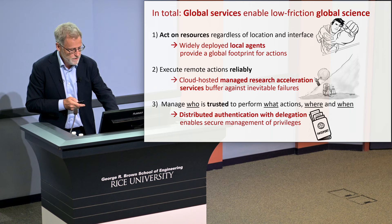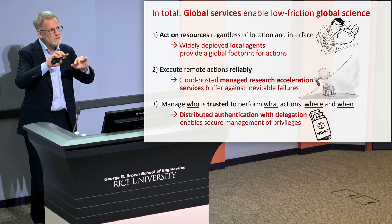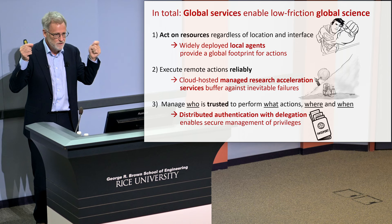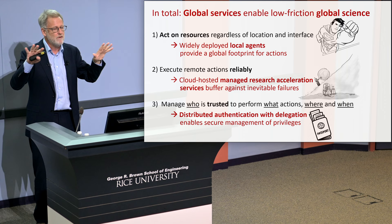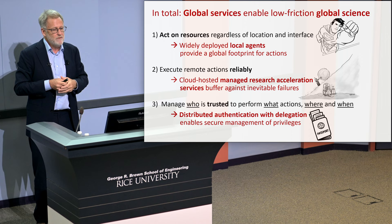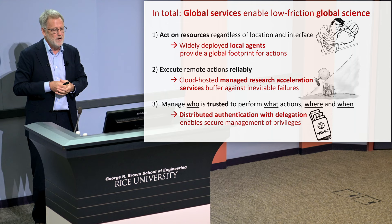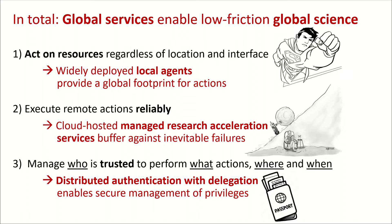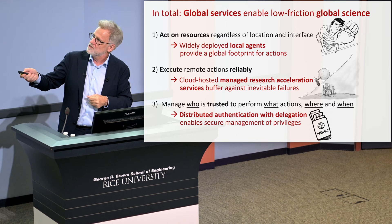To summarize the set of services we've constructed to address these three sources of friction: we've got local agents we deploy anywhere, providing a global footprint for performing actions; we've got managed research acceleration services that allow us to buffer against and recover from various failures; and we've got this concept of delegation implemented in a flexible and robust manner so we can manage who does what where. There's a wonderful cartoon of Sisyphus who's delegated pushing a rock up a hill to a robot.